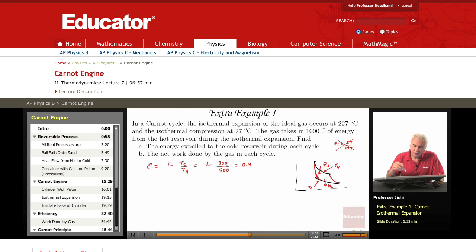Now we're told that the gas takes in 1000 joules of energy from the hot reservoir. So QH is 1000 joules. Find the energy expelled to the cold reservoir, that is find QC.